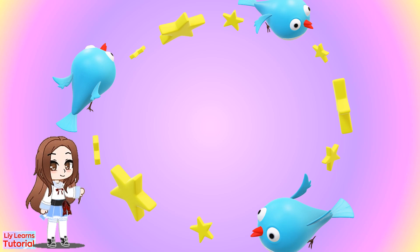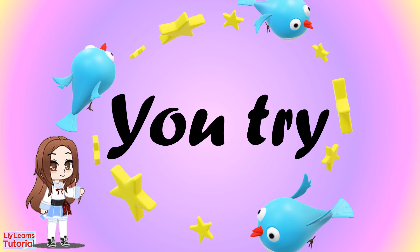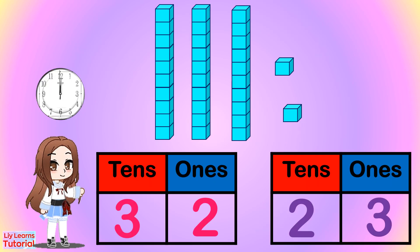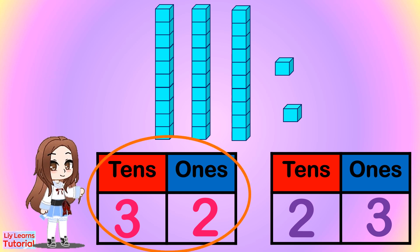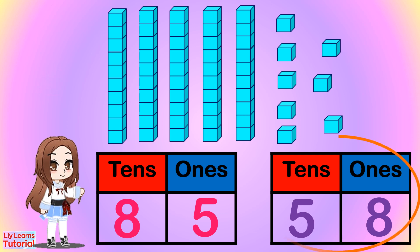Now that we've discussed tens and ones, you try to answer the following exercises. You may pause the video if you need more time. Three tens, two ones — thirty-two. Five tens, eight ones — fifty-eight.